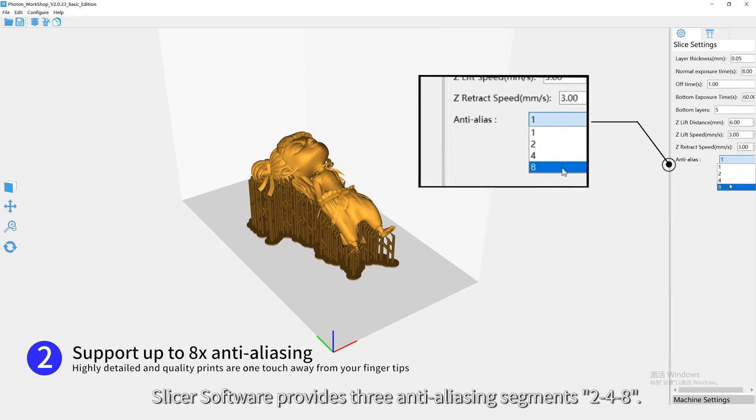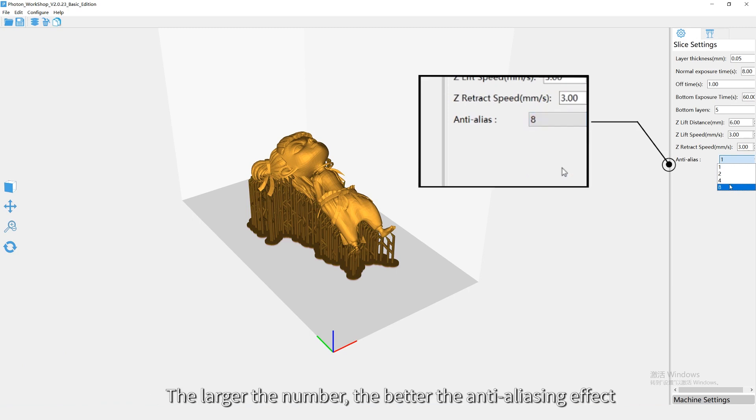Slicer software provides three anti-aliasing segments: two, four, or eight. The larger the number, the better the anti-aliasing effect.